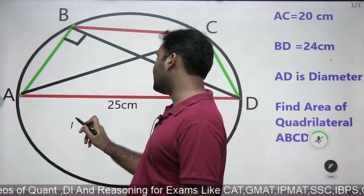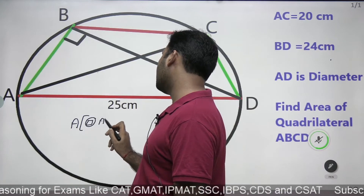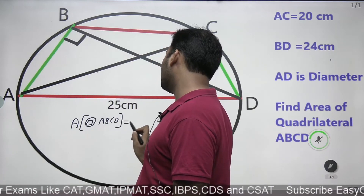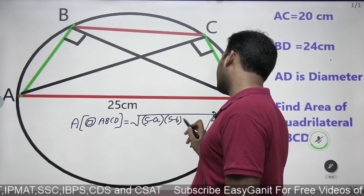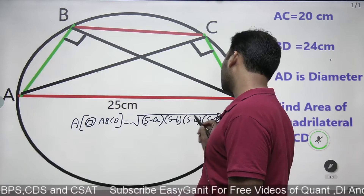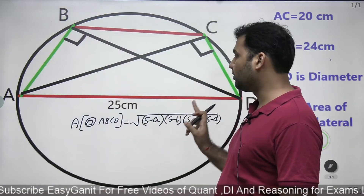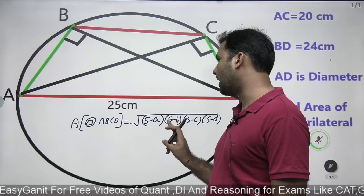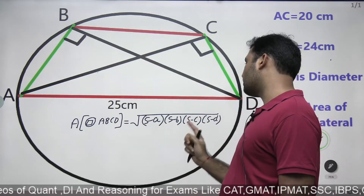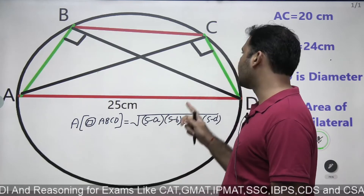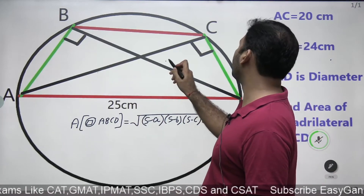The area of a cyclic quadrilateral ABCD is equal to the square root of (S−A)(S−B)(S−C)(S−D). This is known as Brahmagupta's formula for finding the area of a cyclic quadrilateral — another important rule of geometry to keep in mind. Here, A, B, C, D are the sides of the cyclic quadrilateral and S is the semi-perimeter. To use this formula, I need to find out the length of all four sides.